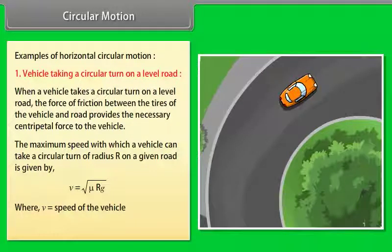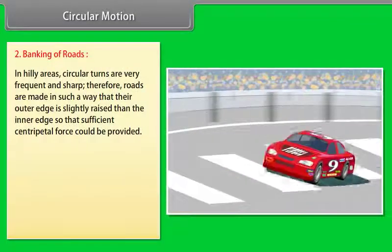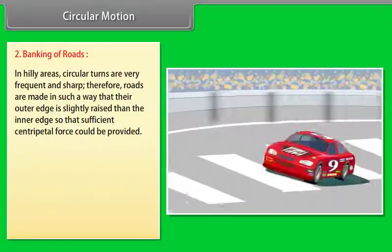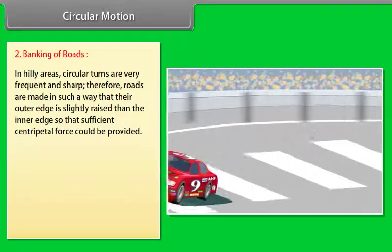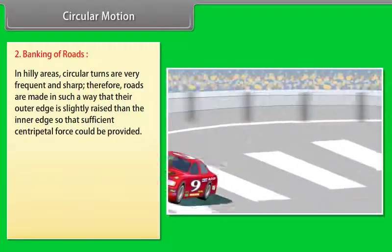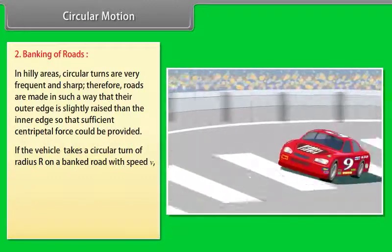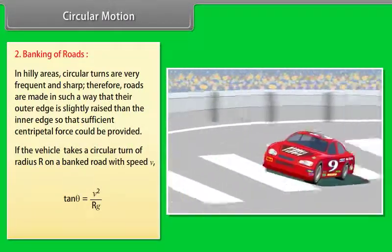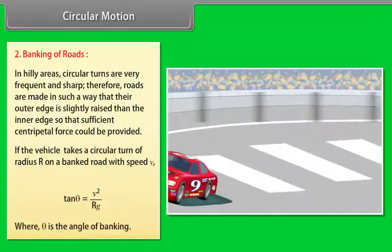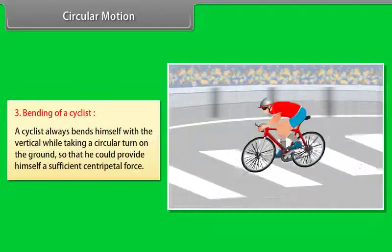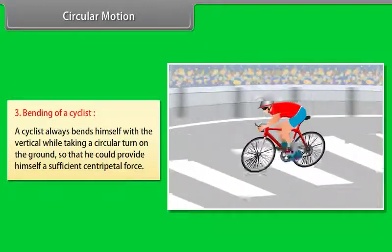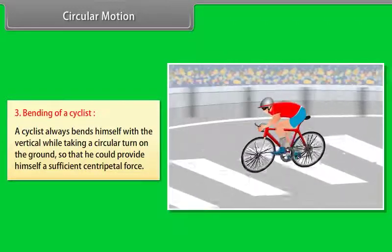Where V is the speed of the vehicle and μ is the coefficient of friction. Banking of Roads: In hilly areas, roads are made with the outer edge slightly raised so sufficient centripetal force is provided. If a vehicle takes a circular turn of radius R on a banked road with speed V, then tan θ = V²/Rg, where θ is the angle of banking. Bending of a Cyclist: A cyclist always bends inward while taking a circular turn to provide sufficient centripetal force.